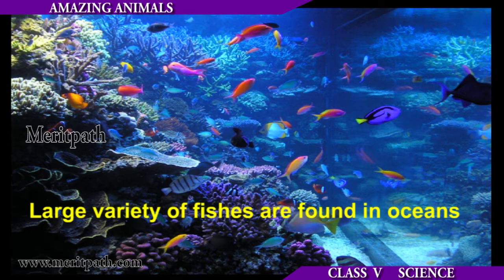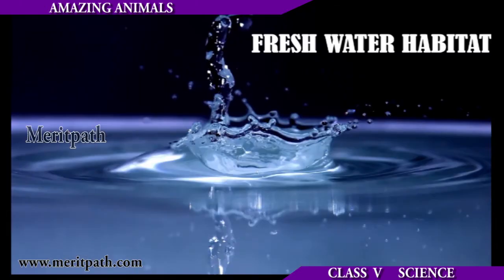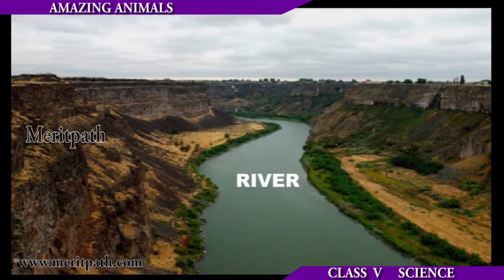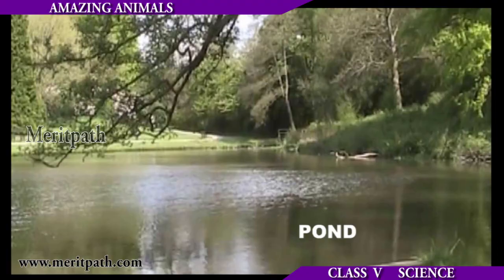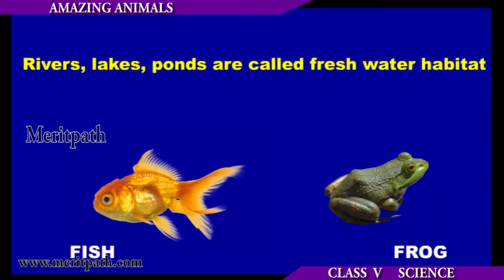Rivers, lakes, and ponds are called fresh water habitats. Examples of animals surviving in freshwater are fish, frogs, etc.